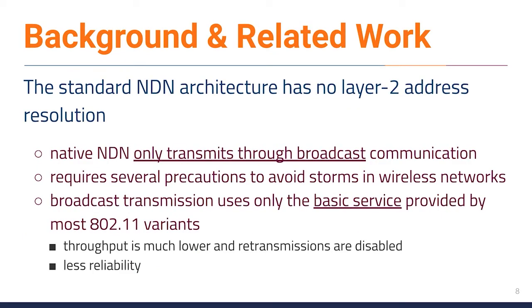NDN networks have an architecture that works differently than IP networks, focusing mainly on content rather than device addressing. The problem with IP networks is that they rely on end-to-end application communications and depend on the device's location. With the emergence of the IoV, IP addresses have become a limitation due to the high mobility of these nodes. On the other hand, the standard NDN architecture has no layer-to-address resolution.